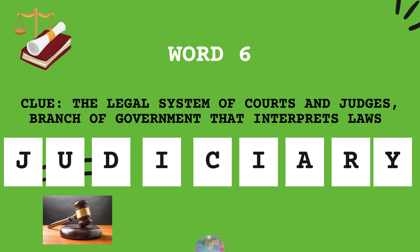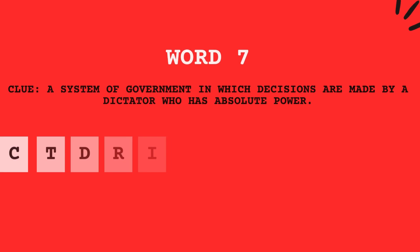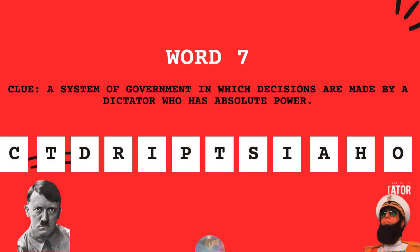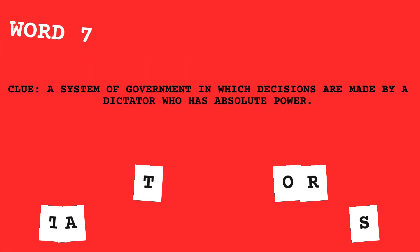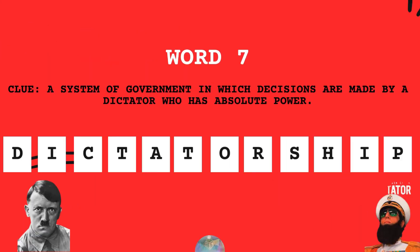This is a system of government in which decisions are made by an individual who has absolute power. This individual is usually known as a dictator. That is correct — dictatorship.